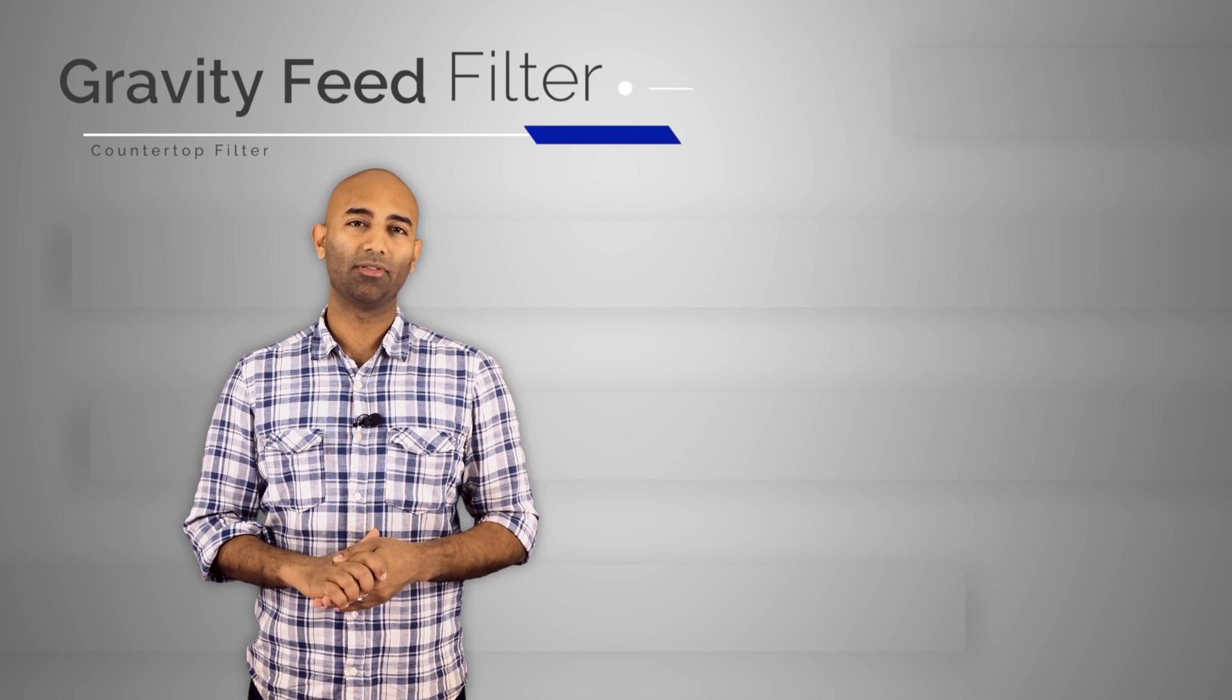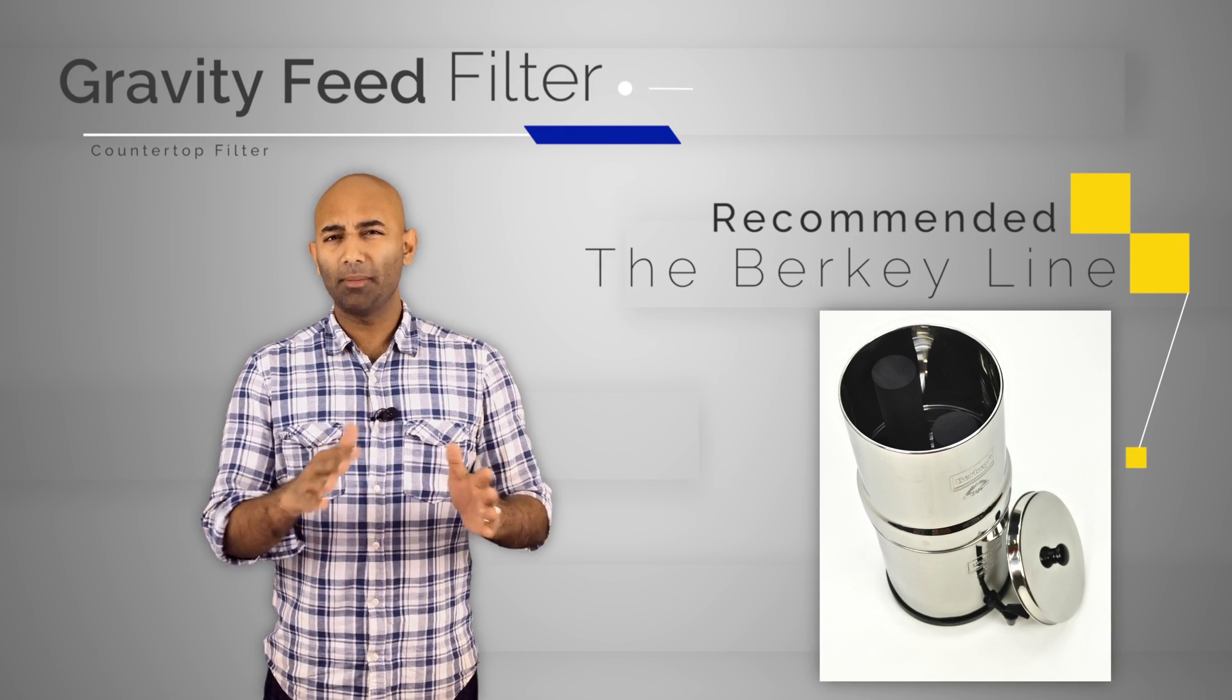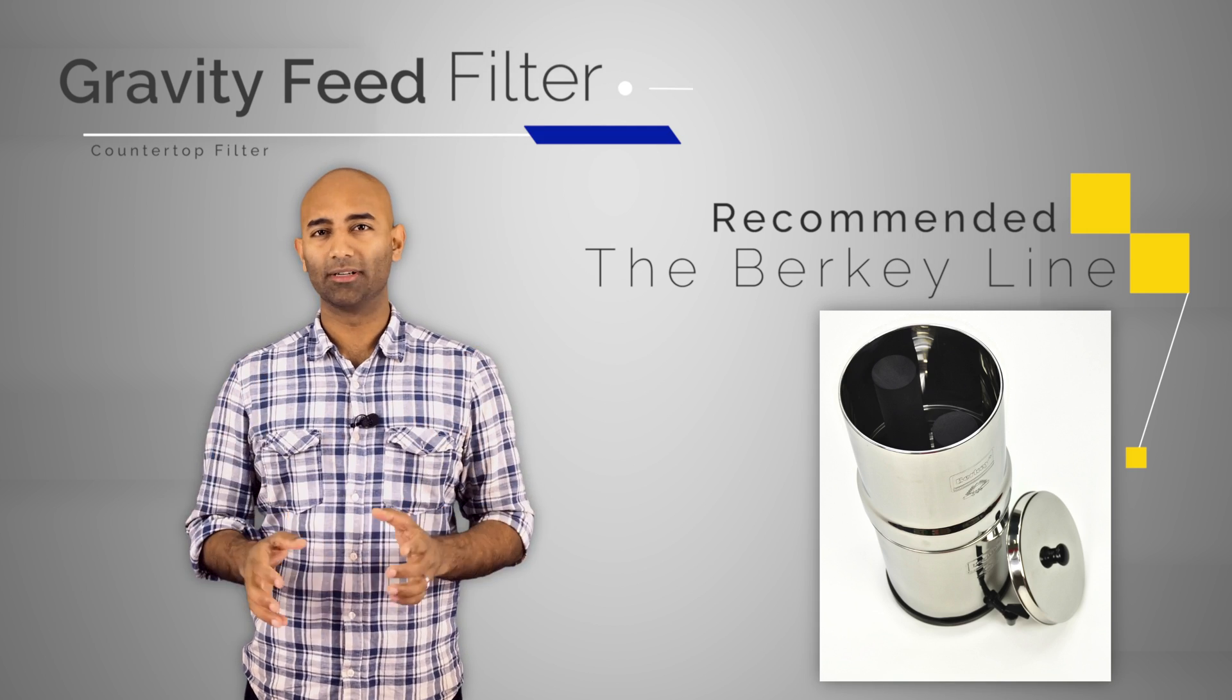The first type would be a gravity feed type. The best example I can think of for this is a Berkey. I'll have a link in the description but these Berkeys are great. There's a couple different models but most of them are stainless steel. They'll last a long time. They're built really well.